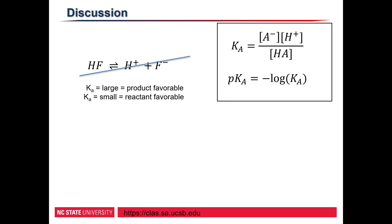Larger values of Ka tell us that the product is favorable, while smaller numbers tell us that the reactant is favorable. What this indicates is stronger acids will tend to dissociate in solution.